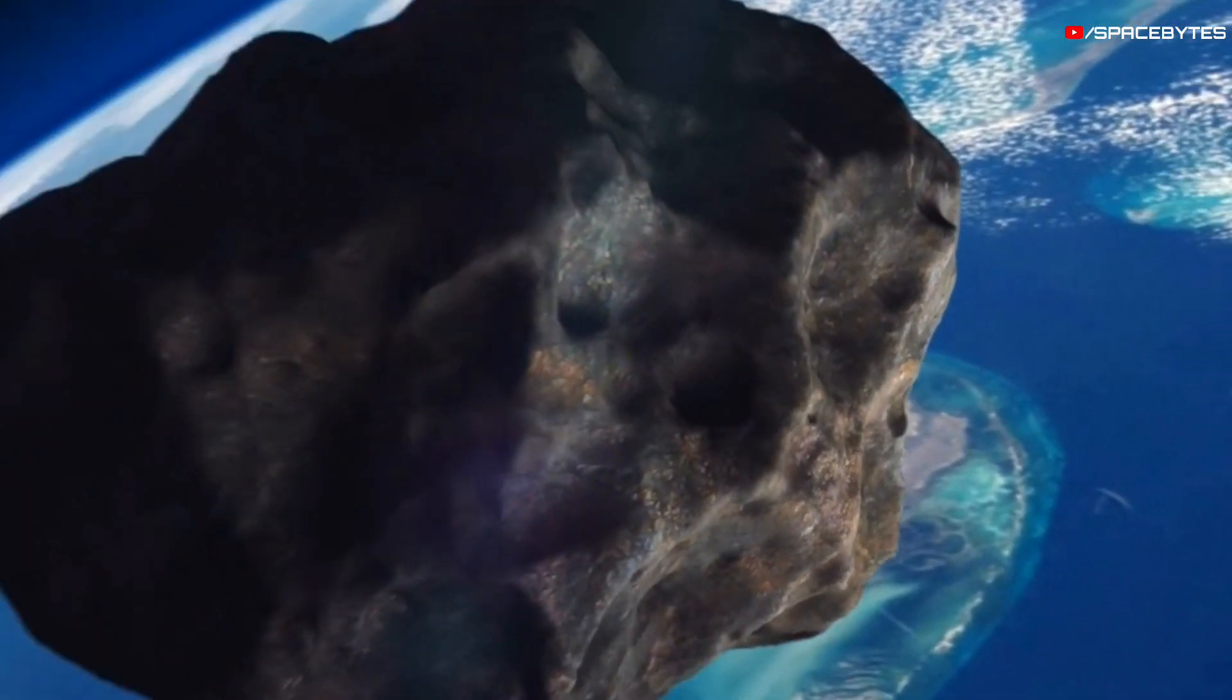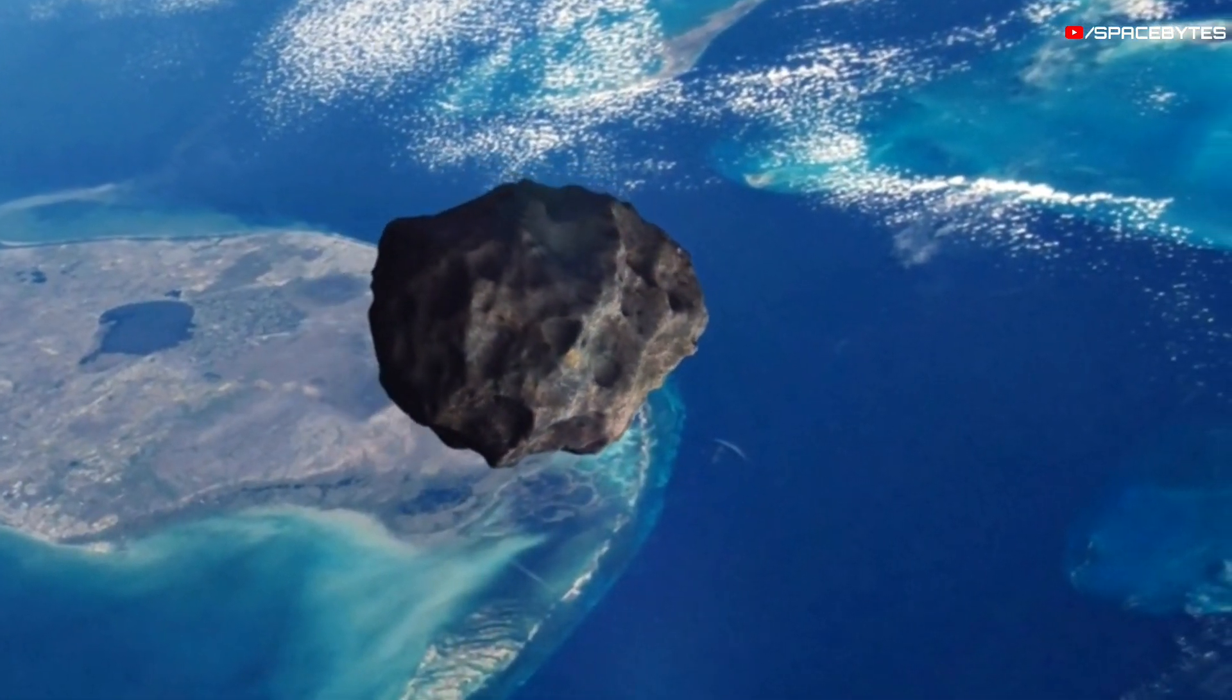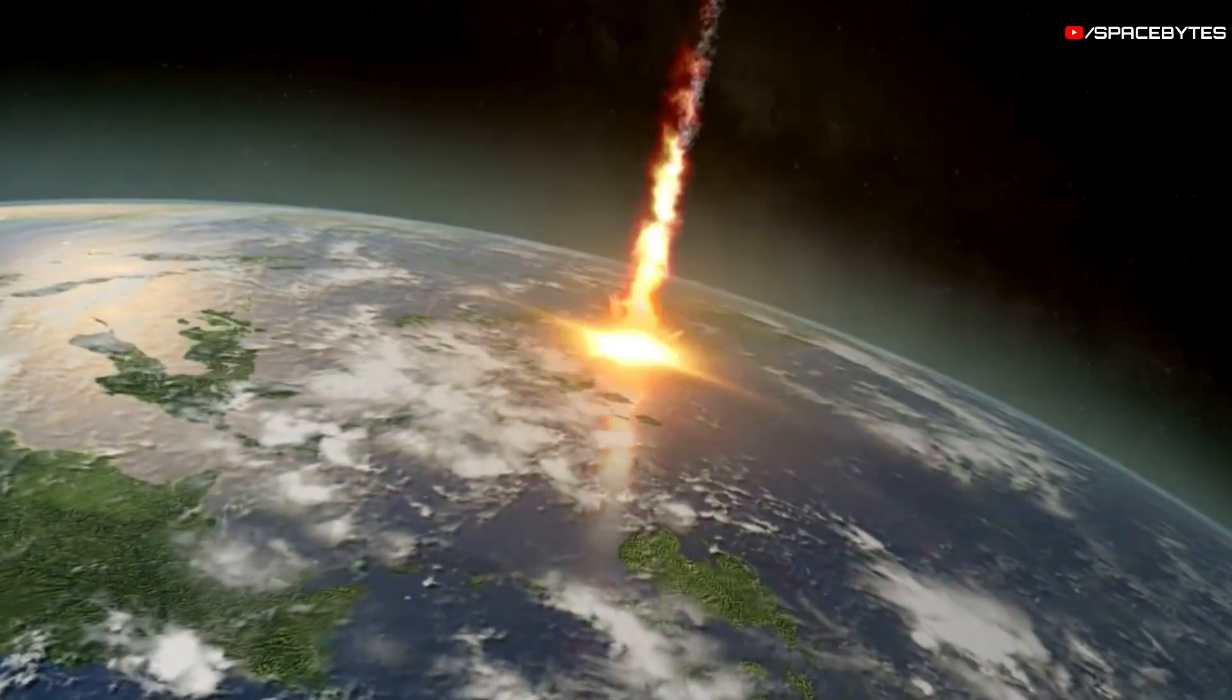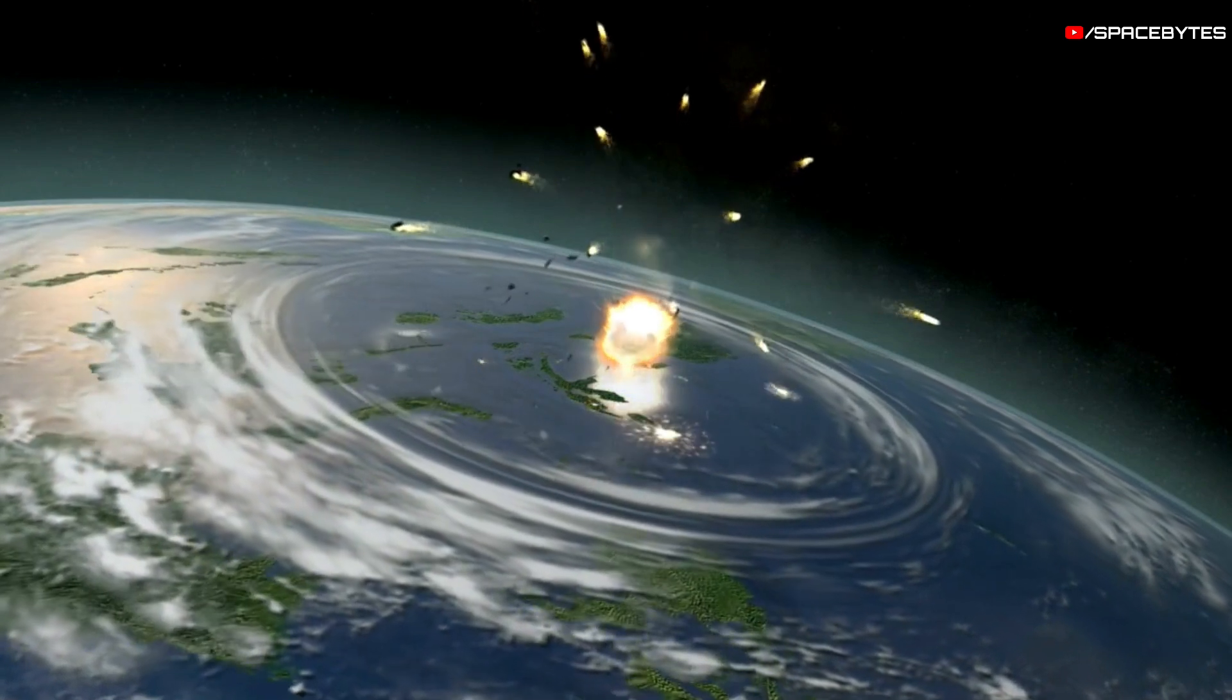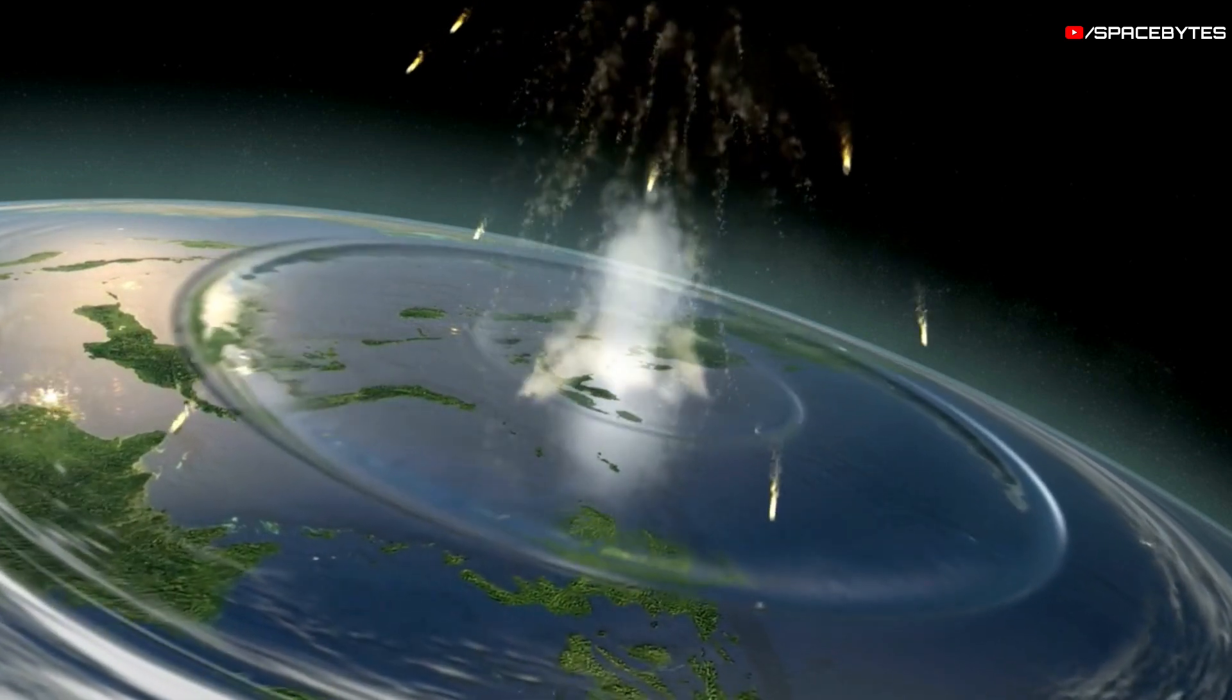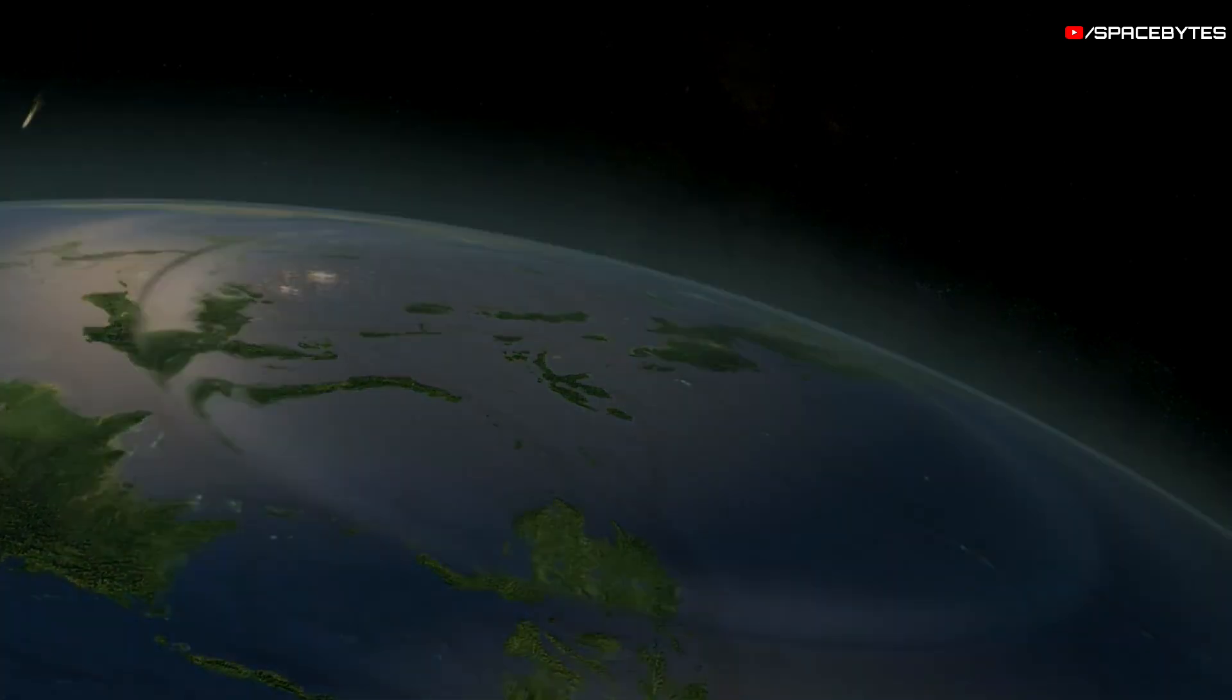Things start to get frightening when we consider that asteroids that are more than one kilometer wide are categorized as planet killers. If one of these asteroids were to collide with Earth, the consequences would be catastrophic for all life on the planet. Such a collision would cause massive amounts of dust and debris to be released into the atmosphere, where they could remain for years, potentially causing significant environmental damage.